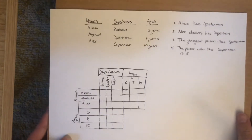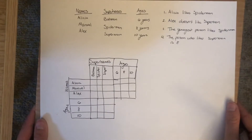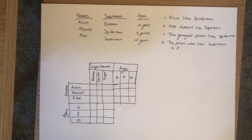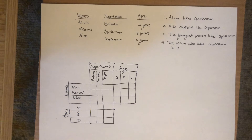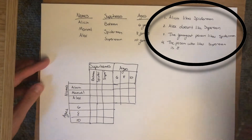Now that the table is done, you can see it's almost like a square but with some parts missing. If we made it a complete square, we'd have ages mapped to ages, which doesn't really add any information — whoever's six is also going to be six, and that doesn't help us. So you don't actually need that part. Now that we have our table made, we can start using it. First, I'm going to read through the clues and get all the information we know from the clues into our table.